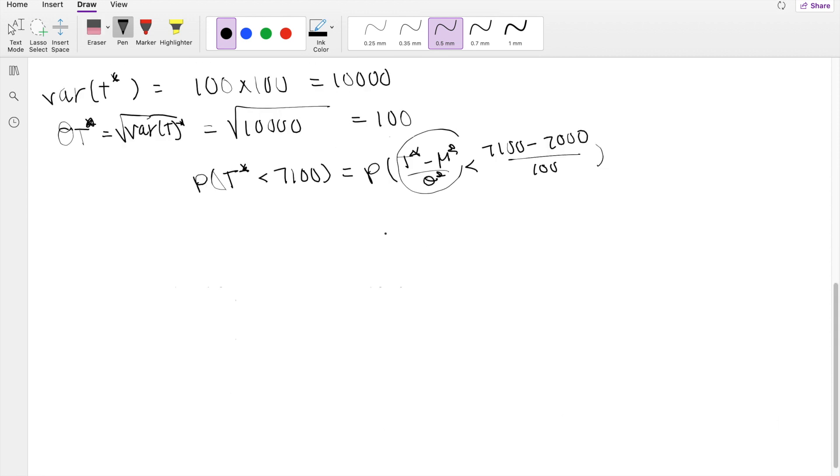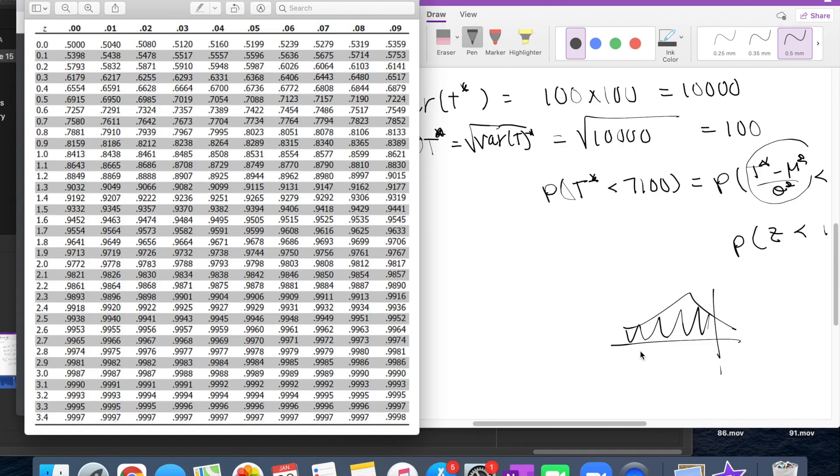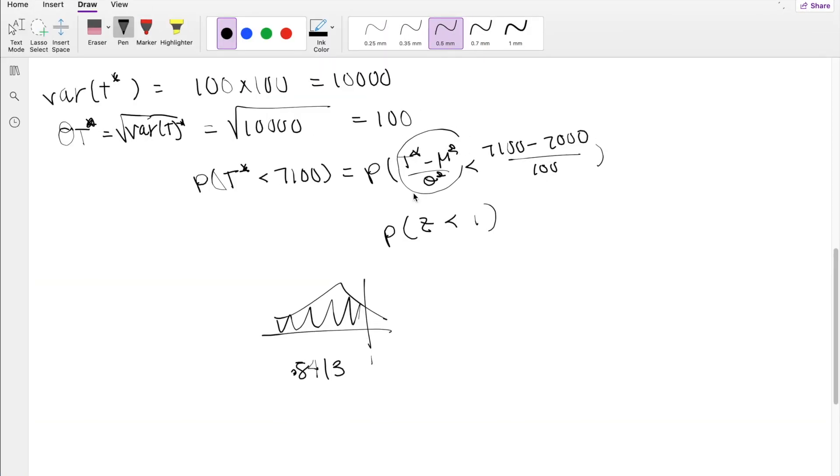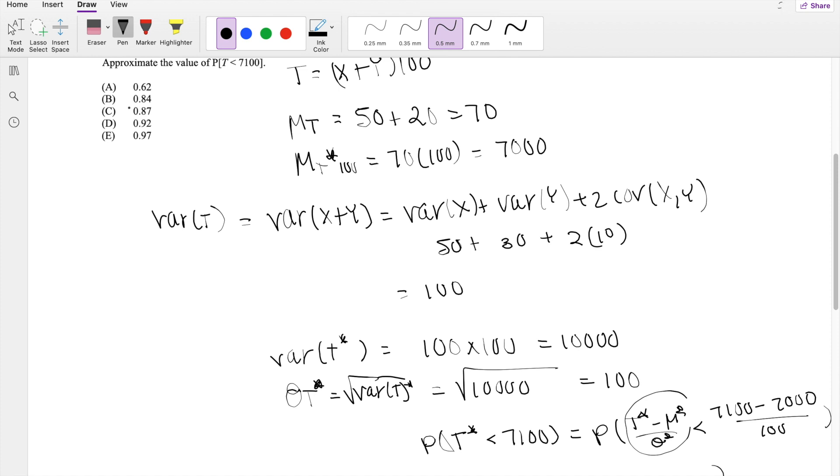So then this is the definition of Z, probability that Z is less than 1. All right, so then we can just look at the Z table and see what this value is. So that corresponds to 0.8413, which is our answer B.